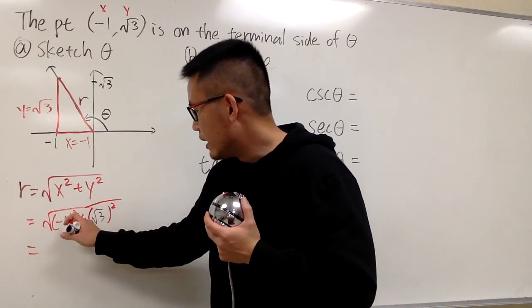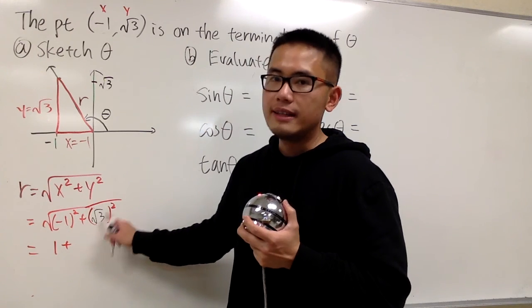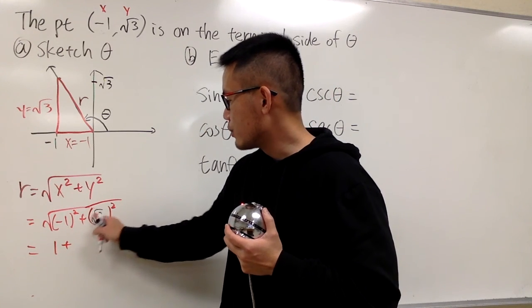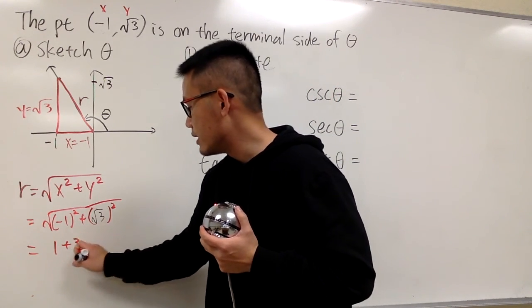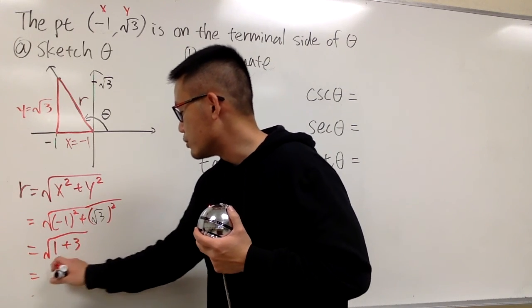Okay, negative 1 squared is 1 plus square root of 3, and then square that, they cancel out. The square root and square cancel out, so we just have 3. And then, you have the big square root outside. This is 1 plus 3, which is 4.